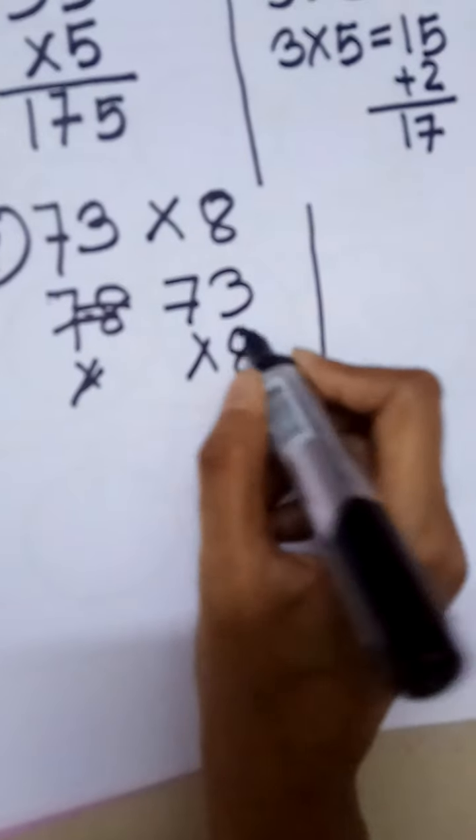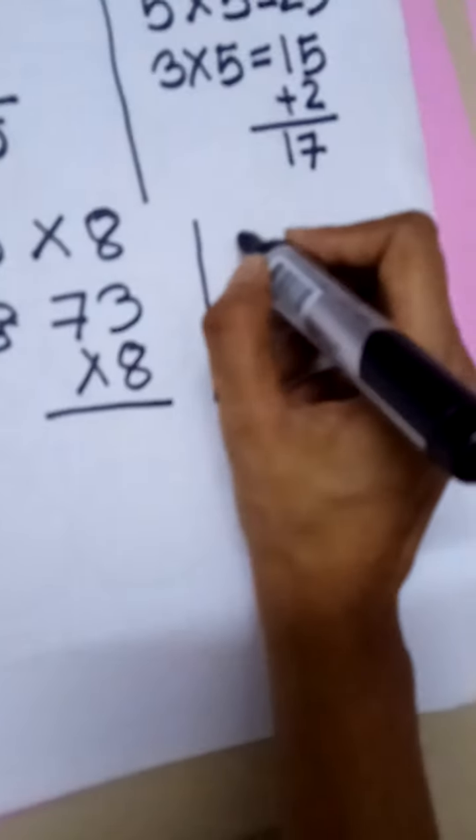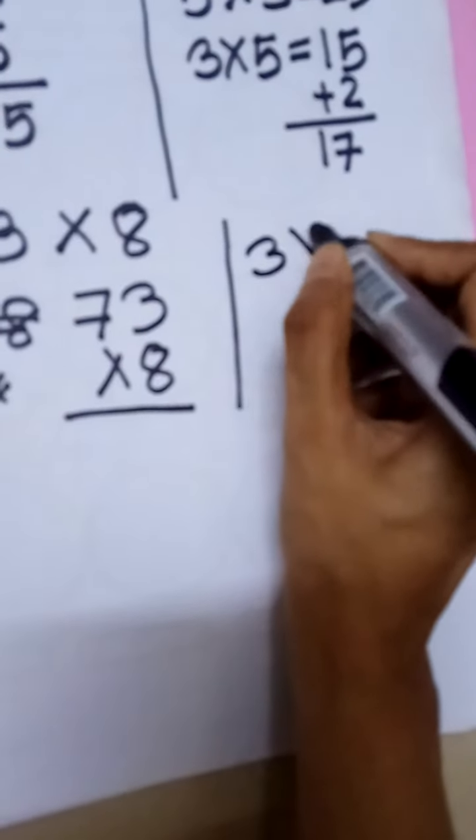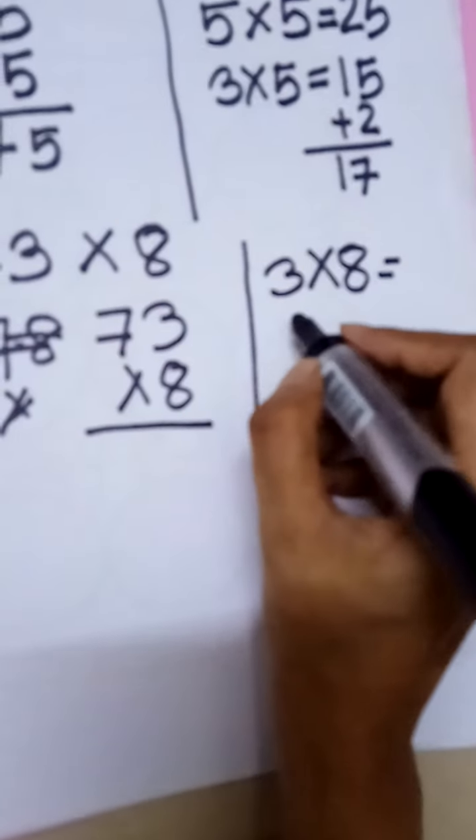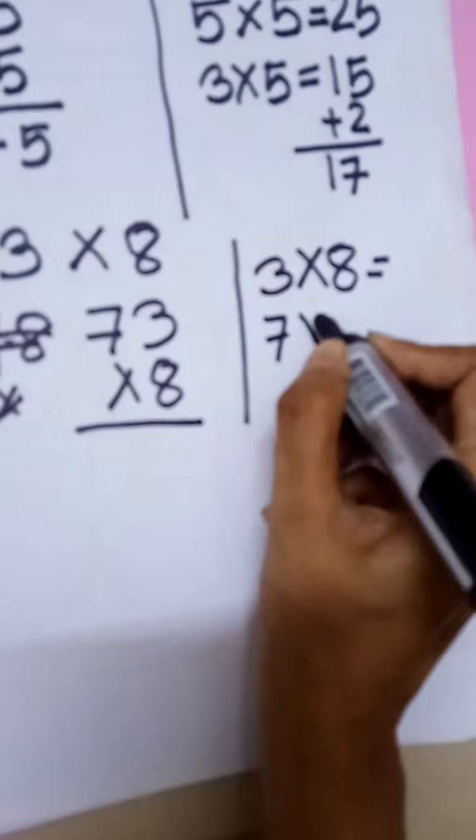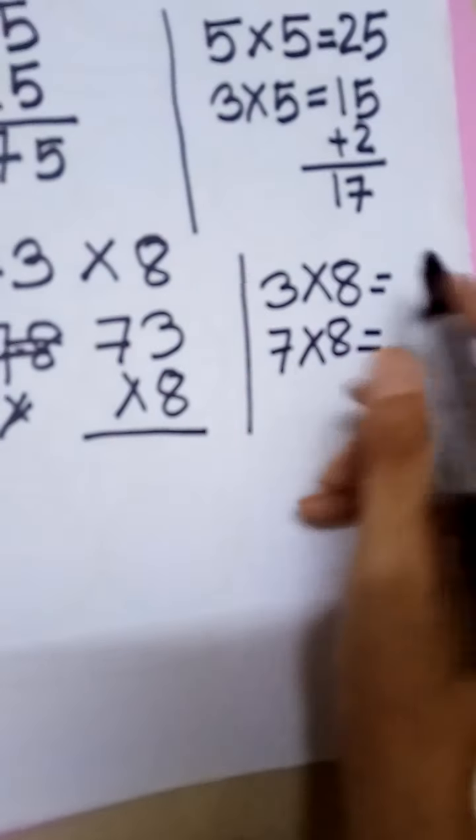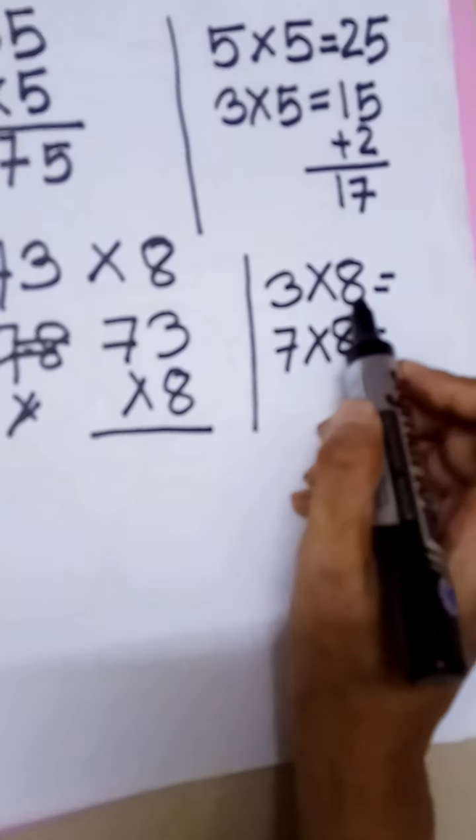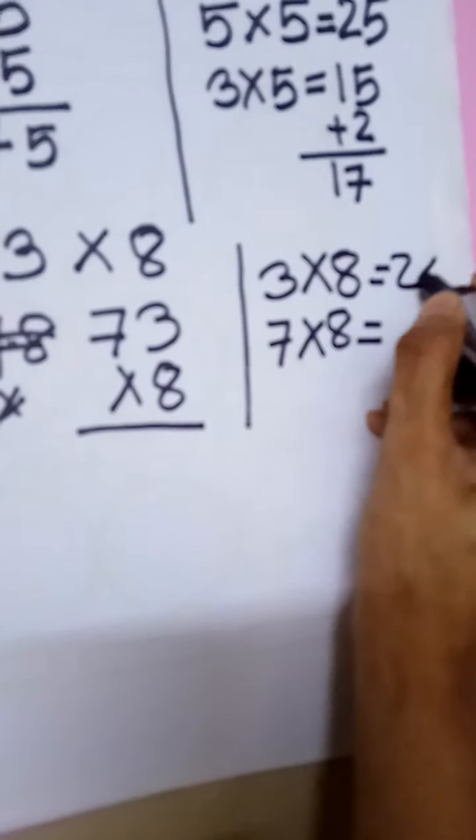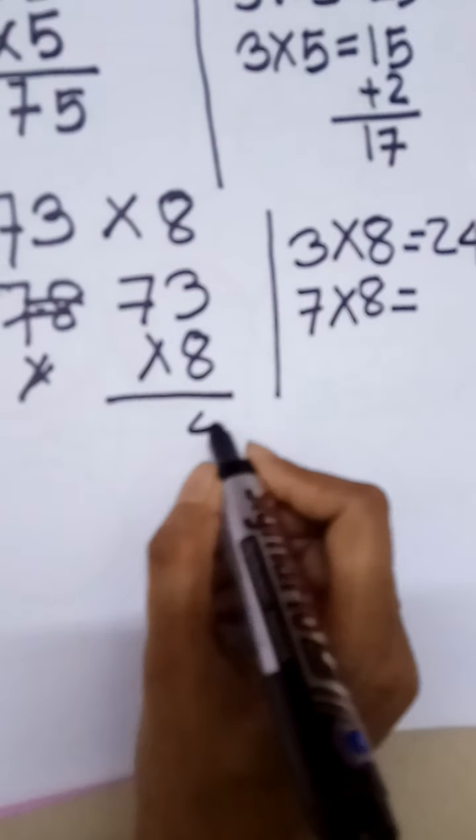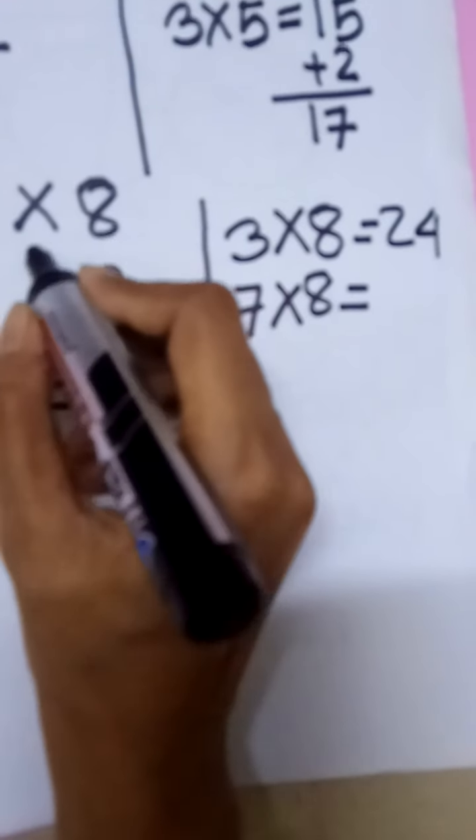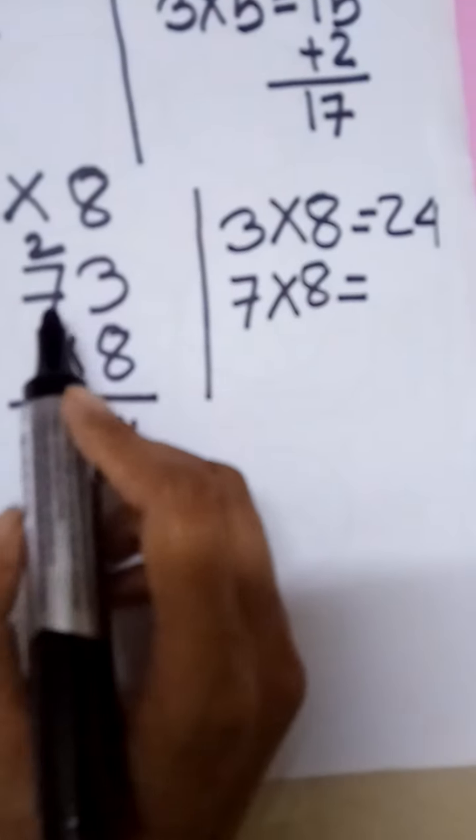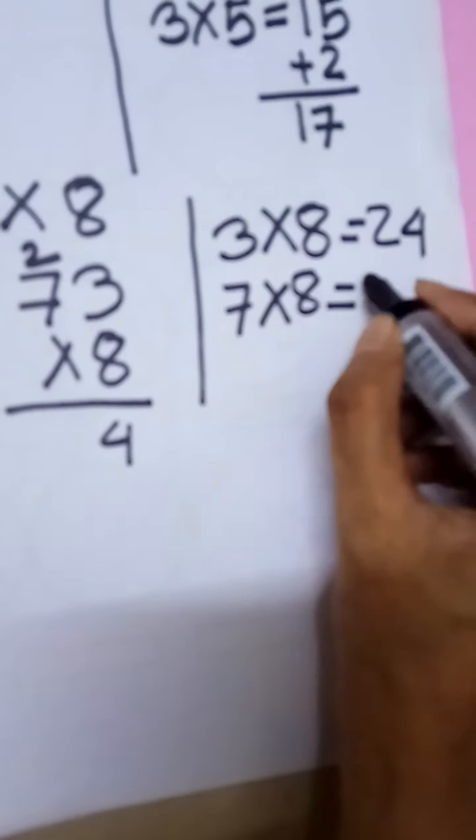Then multiply ones into ones, and ones into tens. 3 times 8 equals 24. Write 4 here, and carry 2. Then 7 times 8 equals 56.